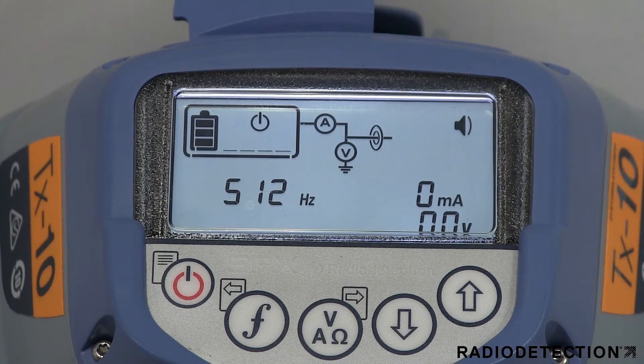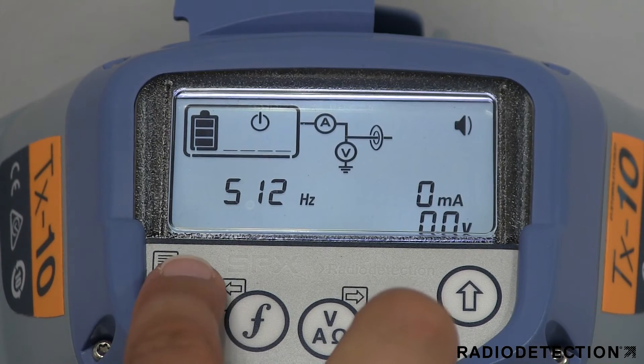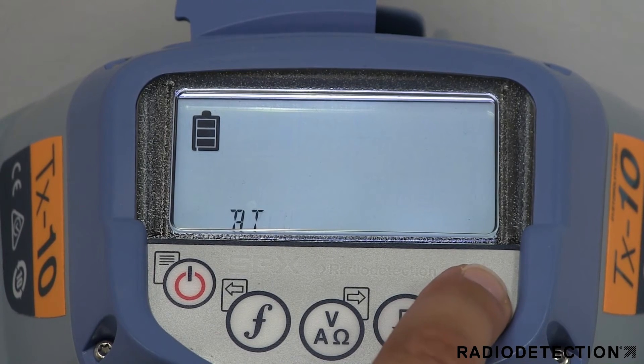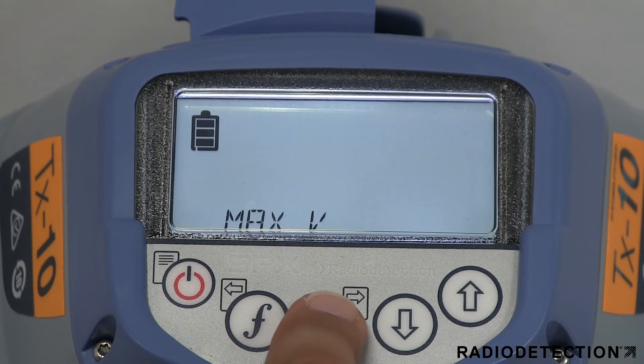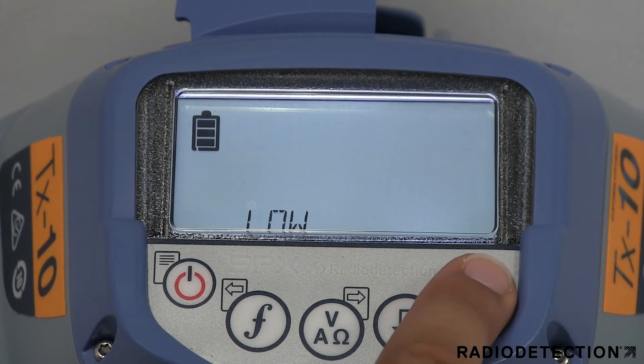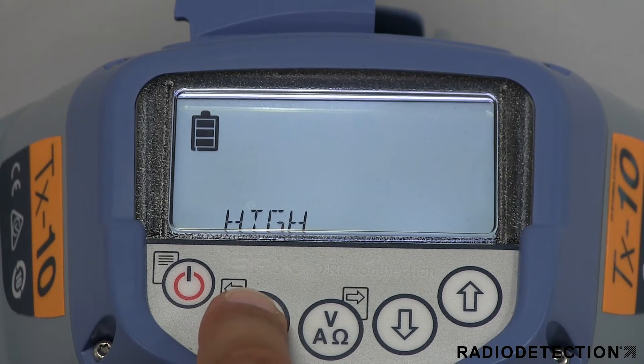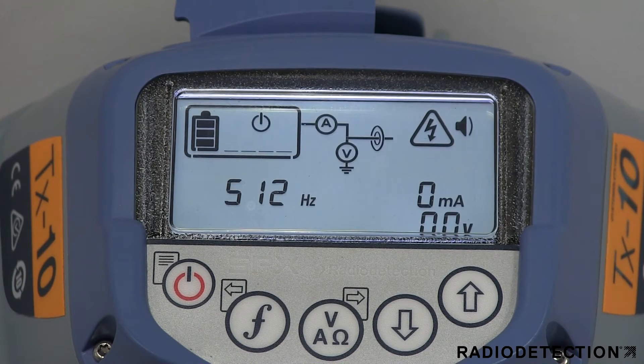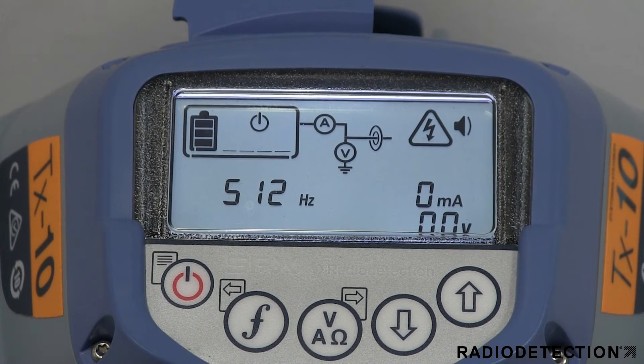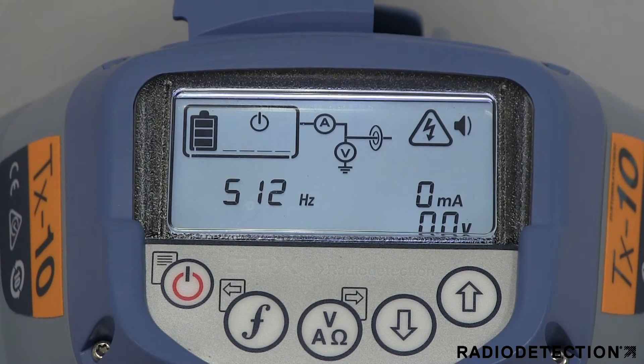The Max V menu item allows you to change the output voltage from low to high. As a safety feature, the transmitter will always power on in the low voltage option. When using the high output option, a warning triangle will appear on the screen to remind you to take extra care due to the high voltage output now being generated by the transmitter. This feature will only work when the direct connection leads are plugged in.